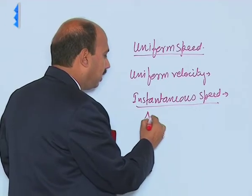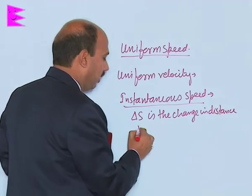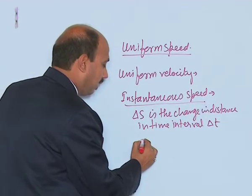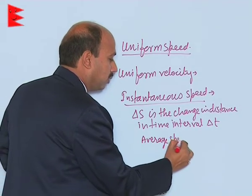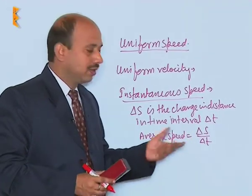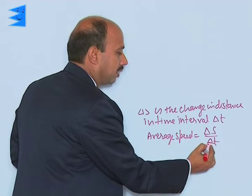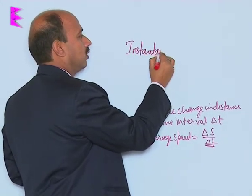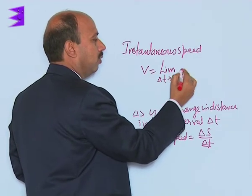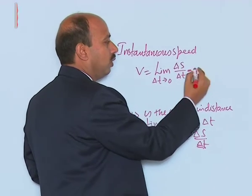Suppose delta S is the change in distance in time interval delta T. We can write average speed as delta S upon delta T, that is total distance travelled divided by time interval. For instantaneous speed, we keep on reducing delta T, so instantaneous speed V is equal to the limit as delta T tends to 0 of delta S upon delta T, which is the change in distance upon change in time, that is ds upon dt.